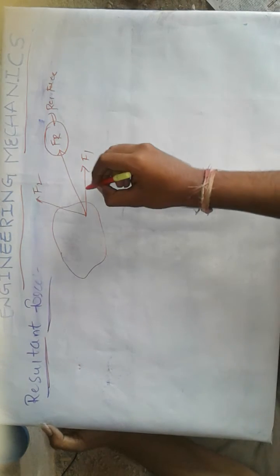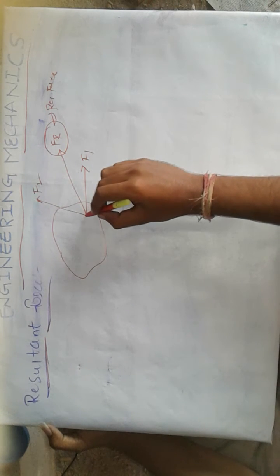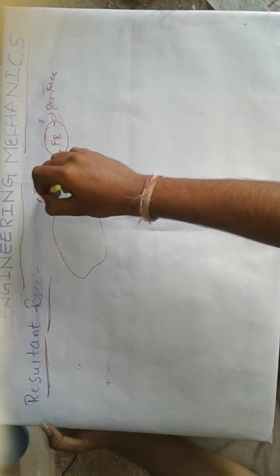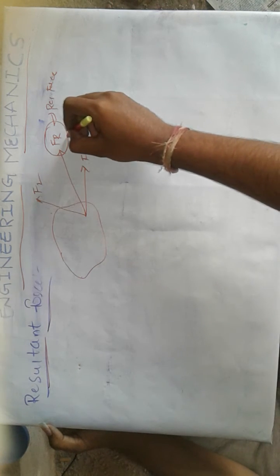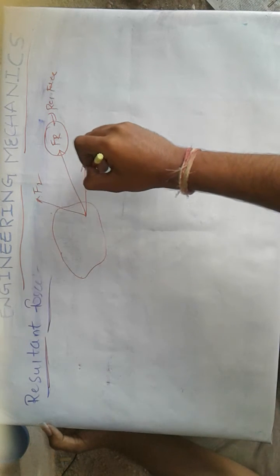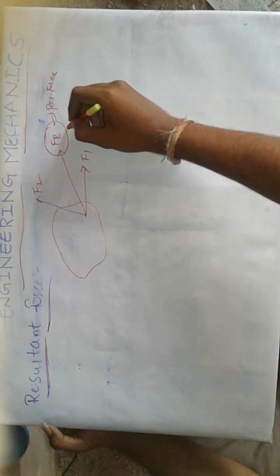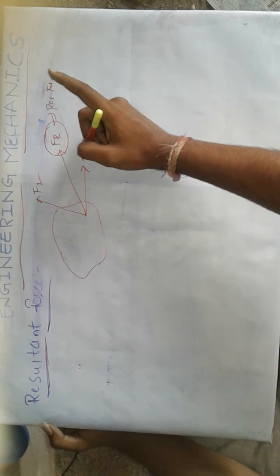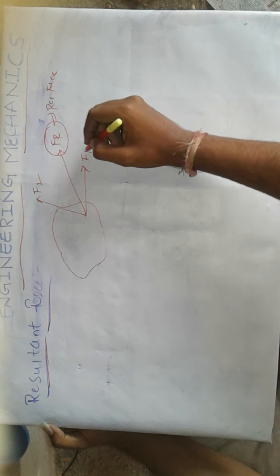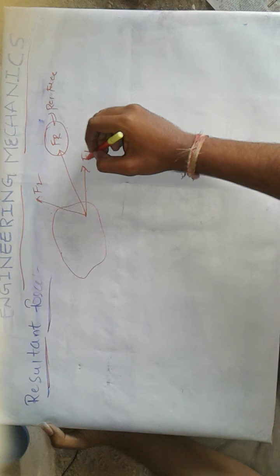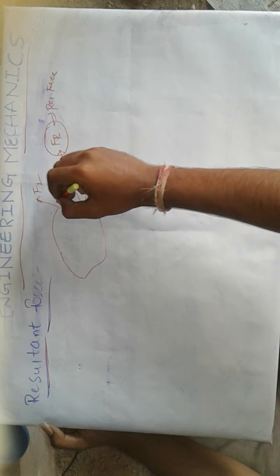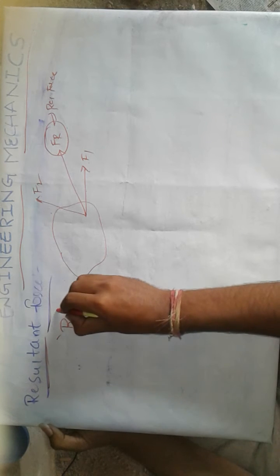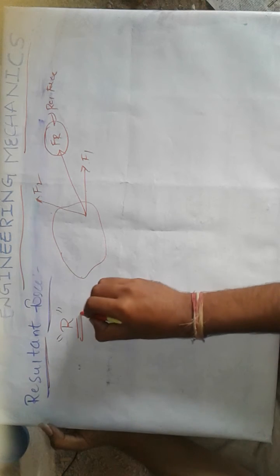Resultant force, in the sense: whatever the effect produced by these two forces on this body, these two forces are replaced by a single force with the same effect produced on the body. Then it is said to be the resultant force. Nothing but a resultant force is a single force which produces the same effect as all the forces acting on the body. It is generally denoted by the letter R.